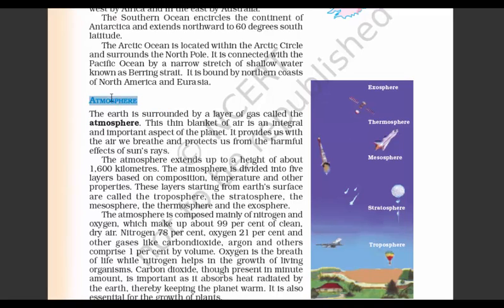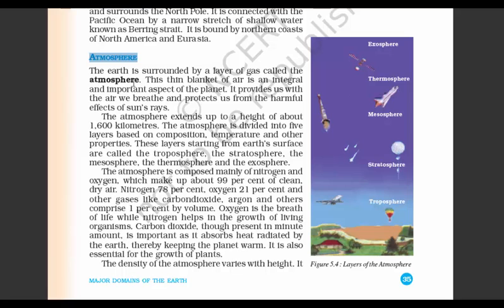Coming to the next topic: atmosphere. The Earth is surrounded by a layer of gas called the atmosphere. Looking at the picture, you can see the different layers: first comes troposphere, stratosphere, mesosphere, thermosphere, and exosphere. You can easily remember this as TSMTE or use some kind of mnemonic. Troposphere is the innermost layer — it is the layer at which a plane flies. The stratosphere is where you can see comets; the mesosphere is where rockets are launched; and the thermosphere is where satellites are launched.